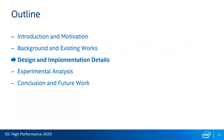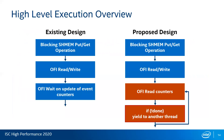Now I'm going to talk about the design and implementation. I'll go over it briefly, but the details are in the paper. The left-hand side presents the existing design: whenever an OpenSHMEM application has a blocking put or get operation call, it is translated to a libfabric read or write operation inside the OpenSHMEM library. After doing that operation, it waits for an update to the event counter, which tells us the operation is complete, and then returns back to the application.